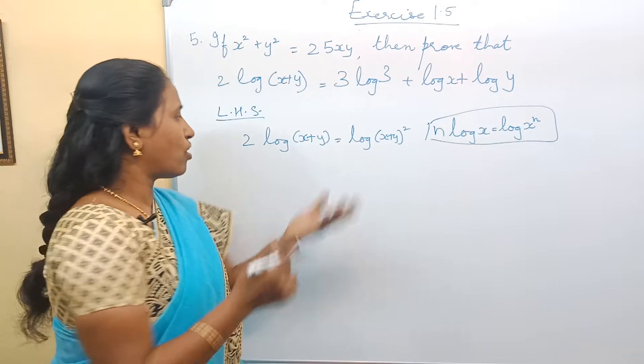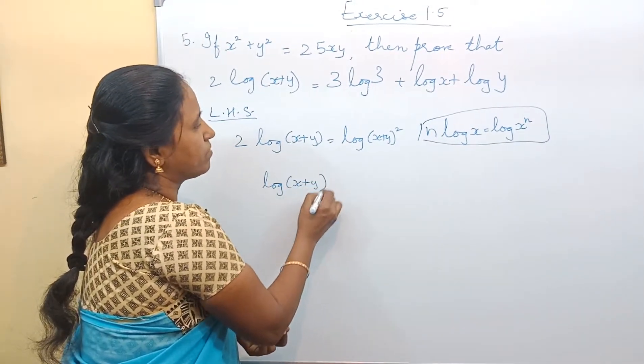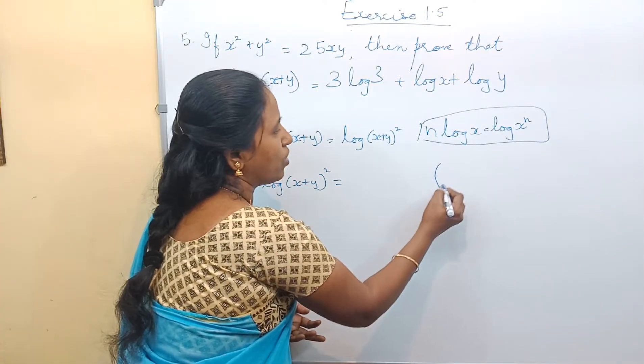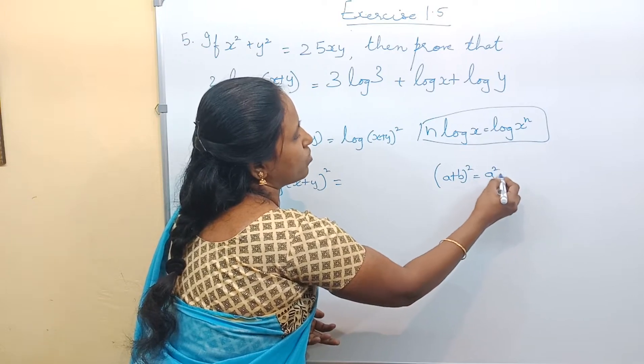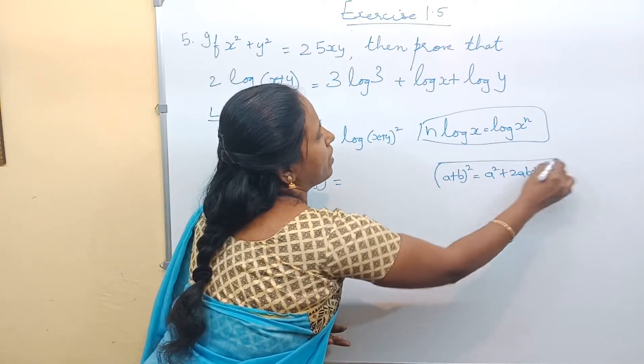And now we have log(x+y)² whole square. Here we use the identities in the form (a+b)². (a+b)² is equal to a² + 2ab + b². Right?